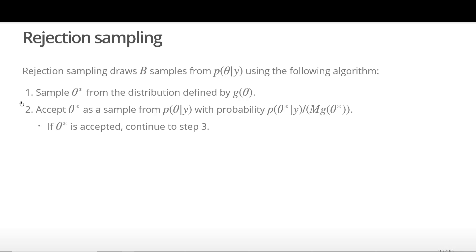If the proposed value of theta star is accepted, continue to step 3. Otherwise, return to step 1 and repeat the process. In step 3, we return to step 1 as many times as necessary in order to get B samples.